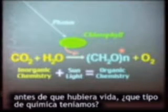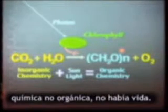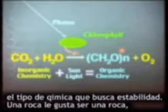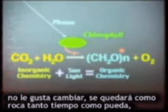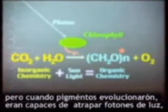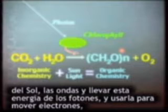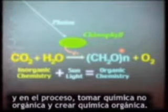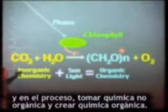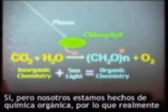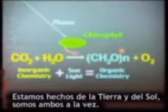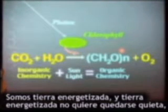What happens at the surface of the Earth? Before life existed, we had inorganic chemistry — the kind that seeks stability. A rock wants to stay a rock as long as it possibly can. But when pigments evolved, they were able to trap photons of light from the sun — the waves — and use that energy to move electrons, converting inorganic chemistry into organic chemistry. And since we're made of organic chemistry, what are we actually made of? We're made of the Earth and the Sun simultaneously.